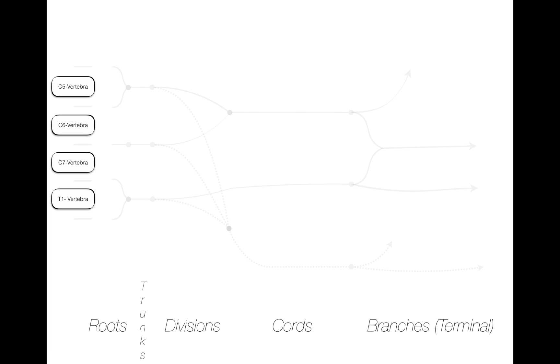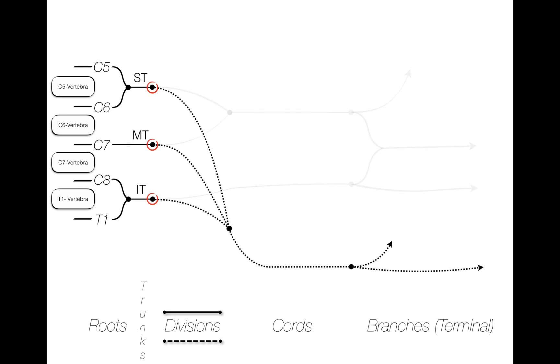Perhaps unlike a tree, the divisions that come from a trunk of the brachial plexus are determining whether a nerve will have a primary path and function that relates to the front or the back, the anterior or the posterior, of the shoulder, arm, forearm, and or hand.